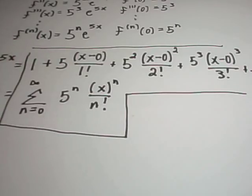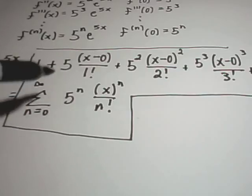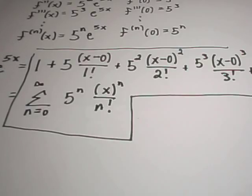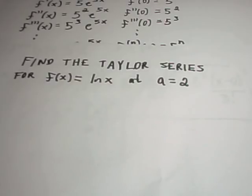This compact summation form is usually what they want to see. The problem could also ask for the radius or interval of convergence, and you would simply apply the ratio test to this series. I'll do another example involving the natural logarithm of x centered at a equals 2 in a separate video — I've already run over time here, so look for that nearby.